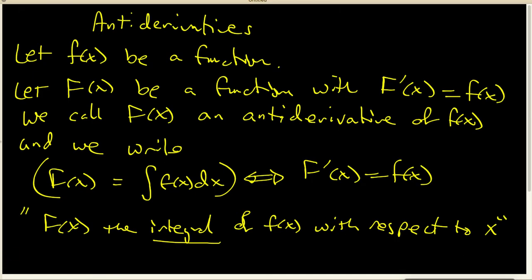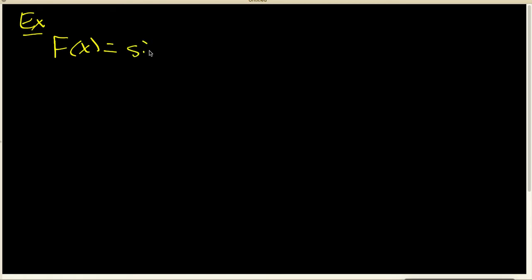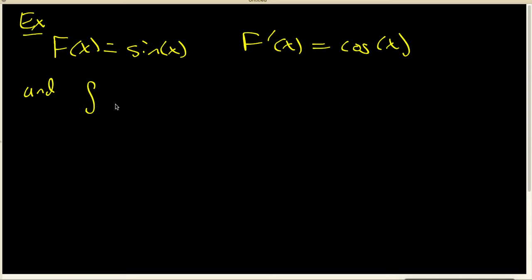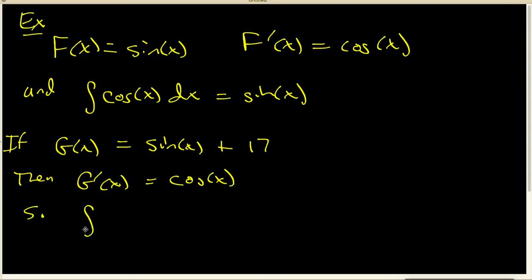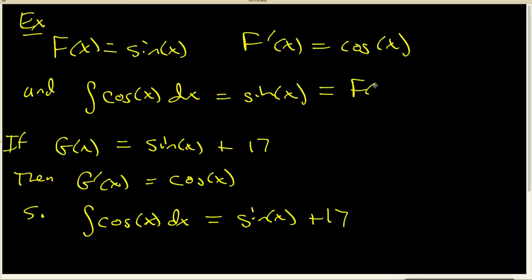I want to look at a couple of very basic examples. For my first example, if I let capital F of x be the sine of x, then I know that capital F prime of x is equal to the cosine of x. And so I can say that an antiderivative of the cosine of x is equal to the sine of x. Now I do want to notice something else. If I let capital G of x be the sine of x plus 17, then capital G prime of x is also equal to the cosine of x. So the integral of the cosine of x dx could also be written as the sine of x plus 17. One antiderivative for the cosine of x is capital F of x, and another antiderivative is capital G of x.